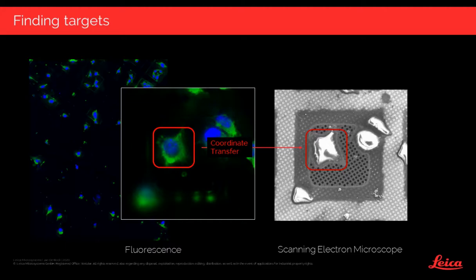Since one would like to exactly retrieve these fluorescent targets in the SEM, it is very helpful to transfer these coordinates together with the image data to the SEM or TEM. This is exactly what our Thunder CryoCLEM allows. You can transfer the image data and coordinates together to, for example, Serial EM — which runs mostly on TEMs — and also to Thermo Fisher Maps. You then simply open one file containing both the image and the coordinates.